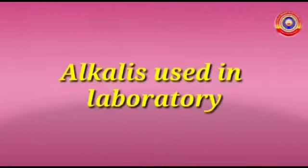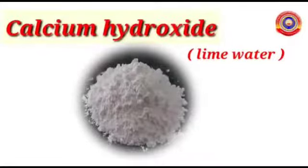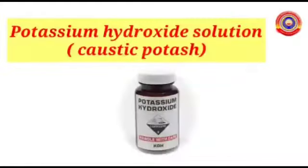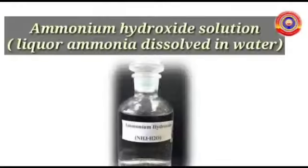Let's see the alkalis used in laboratory. Calcium hydroxide—it is formed when quicklime is mixed with water. Second one: sodium hydroxide solution, caustic soda. Third one: potassium hydroxide solution, caustic potash. Fourth one: ammonium hydroxide solution—liquor ammonia dissolved in water is ammonium hydroxide solution.